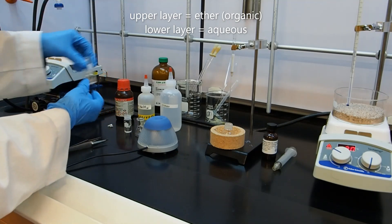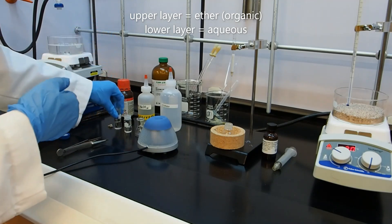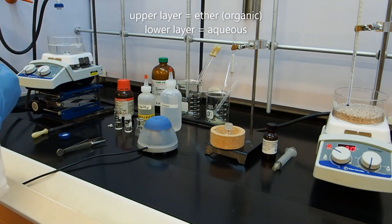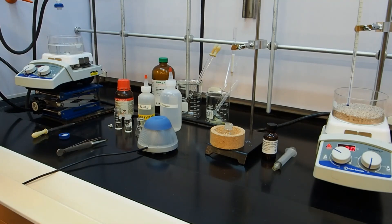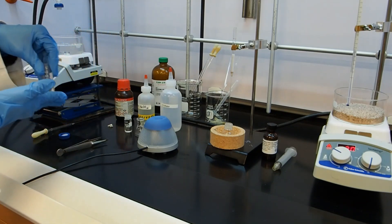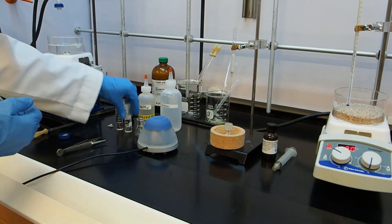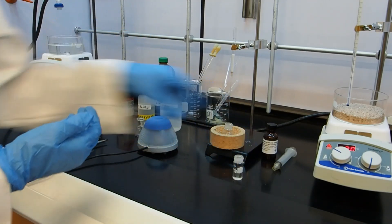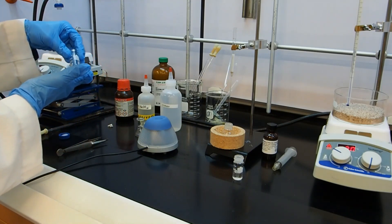So that was extraction with ether. I have water layer here, ether layer here. It's very important not to mix them up or to throw anything away before you've isolated your product. So the next thing we're going to do is we're going to add about 400 microliters of 5% sodium hydroxide to the ether layer. This is our water layer, we're setting that aside. This is my ether layer here.